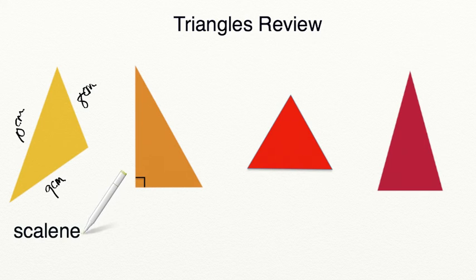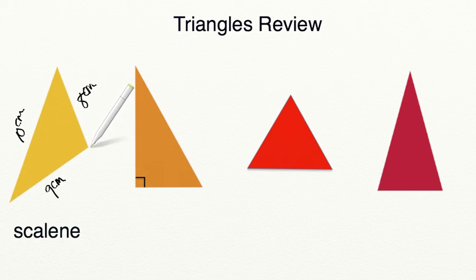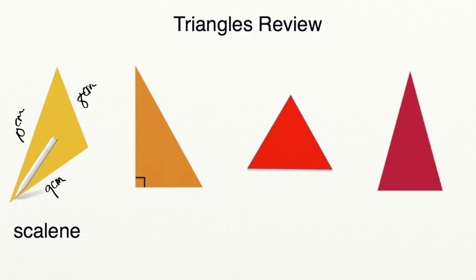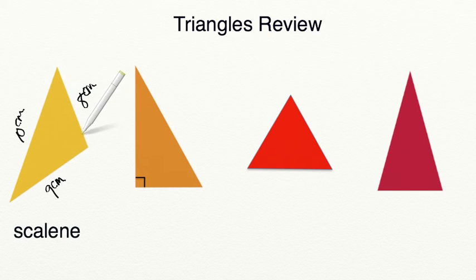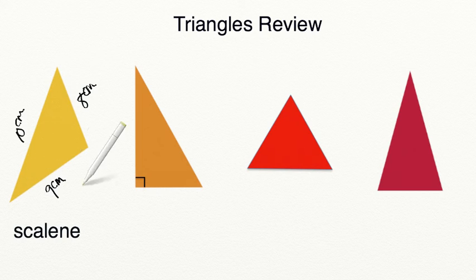Likewise, each angle has to be different as well. For example, this angle might be 60 degrees, this angle might be 30 degrees, and this angle might be 90 degrees. But each angle has to have a different measure.